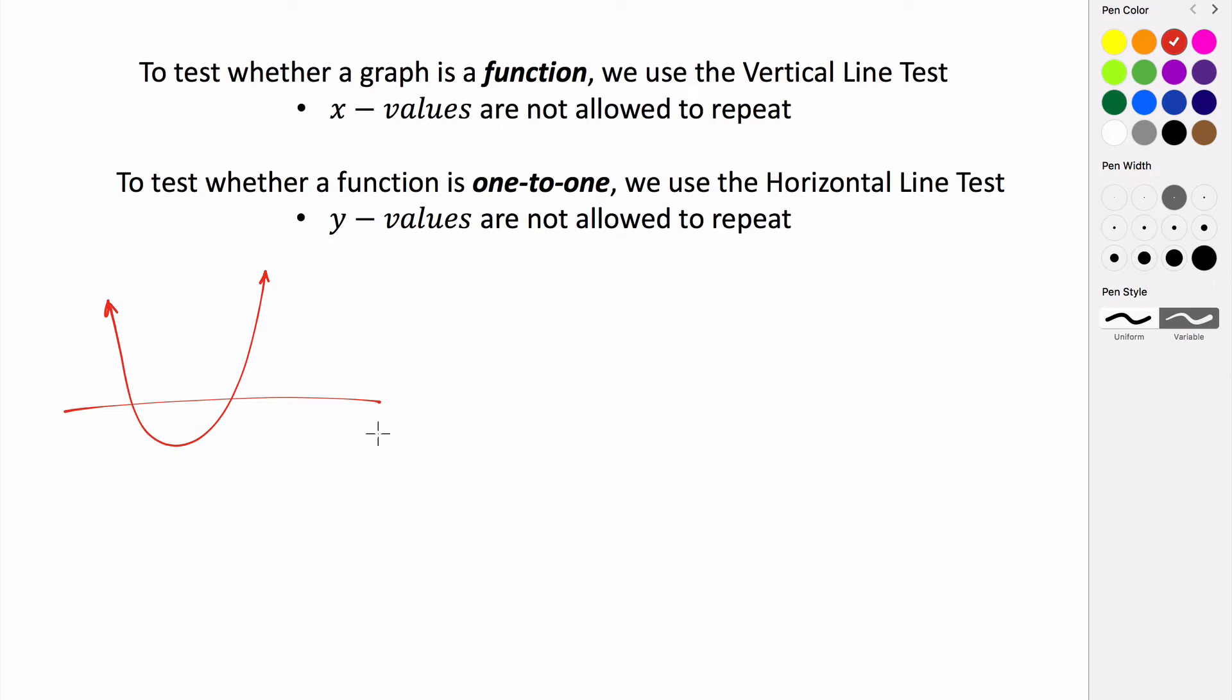Right? You can see that if we do the horizontal line test, we can see that it's going to intersect our graph at two different points here. So it would intersect here and here. So parabola is not one to one, which means its inverse would not be a function.